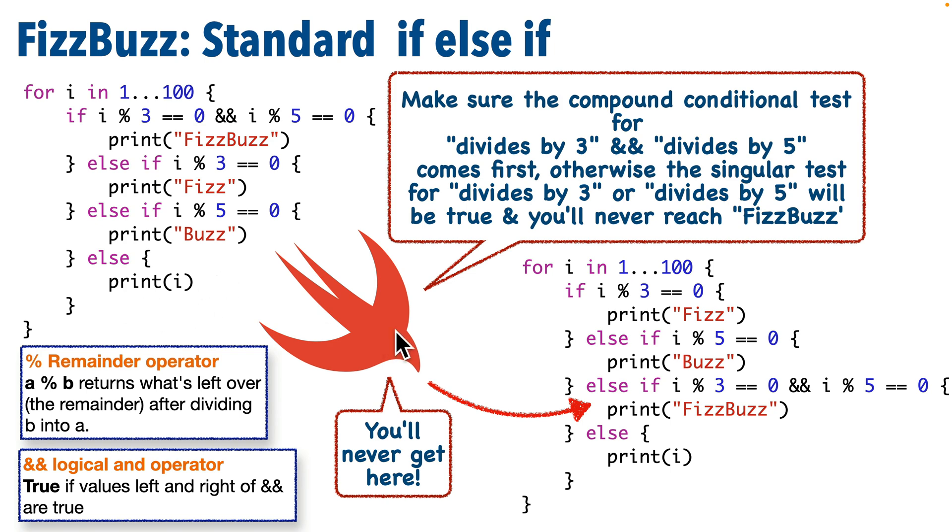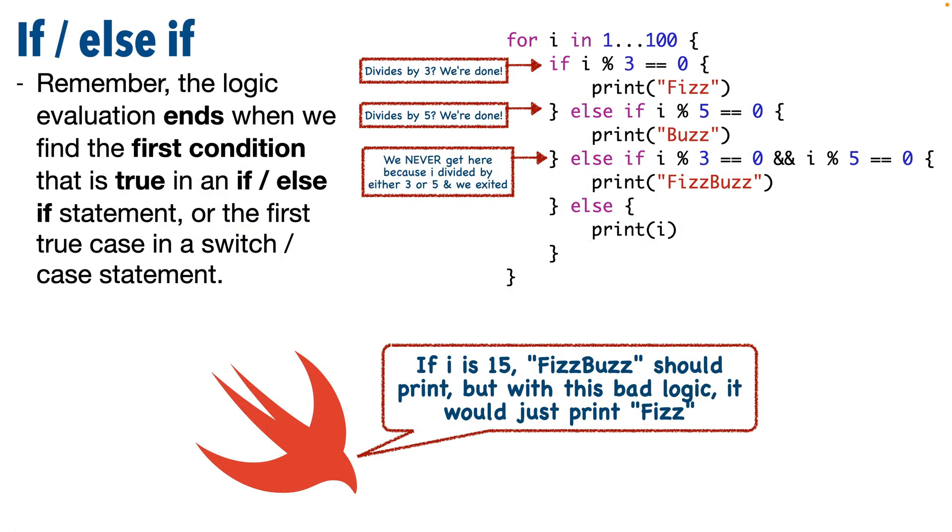Now one thing that's super important to realize is that you need to check the compound conditional first. This business here that uses the double ampersand to see if both 3 and 5 divide evenly. That's because an if-else-if statement stops after the first true condition. Let's imagine our number i is 15 where both 3 and 5 evenly divide by the number. Well, if we use the bad logic on this slide here, we would check to see if we have a remainder of 0 after dividing 3 into i. If that's true, we'd never get down to this condition here, where we check to see if our number i, which is 15, divides evenly by 3 and 5. It does. We should be printing FizzBuzz, but in this case we'd only print Fizz.